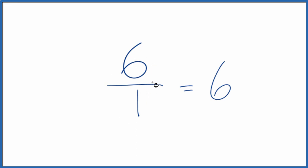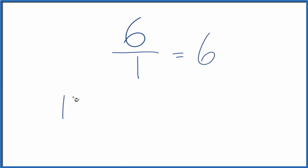So three equivalent fractions for six or six over one. We could just double six and one, double the numerator and the denominator. That would give us an equivalent fraction. So two times six, that's 12. Two times one, that's two.